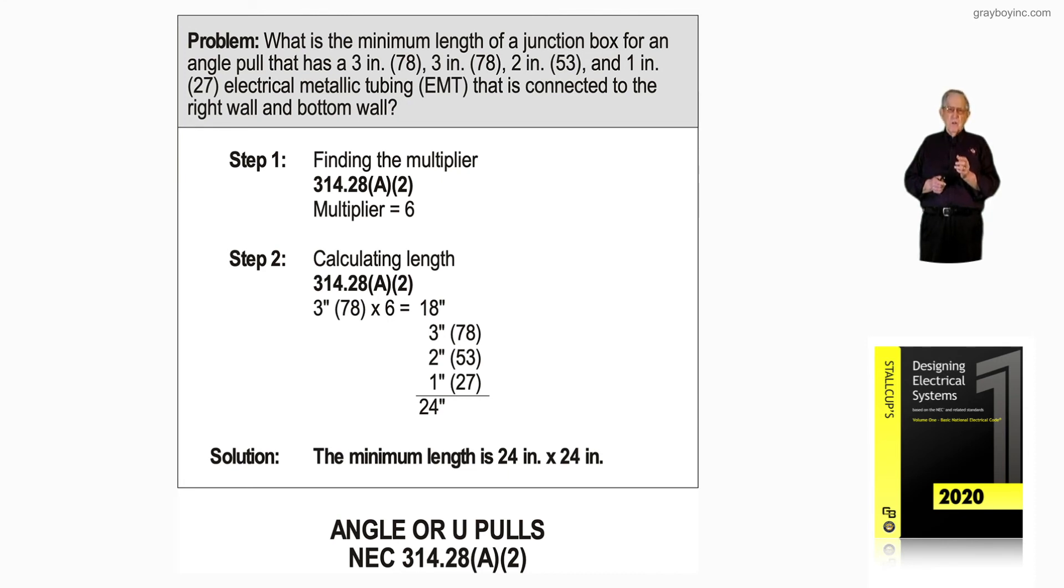But conductors number 6 or smaller use the table. Keep that in mind so that these junction boxes, pull boxes, device boxes, square boxes, octagon boxes are sized properly to accommodate the number of conductors that the electrician is pulling into those enclosures or through those enclosures. And that's what this illustration is illustrating: angle or U-pulls in accordance with NEC 314.28(A) as in apple, 2.